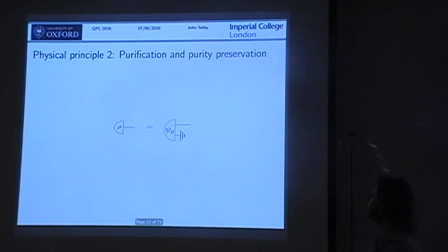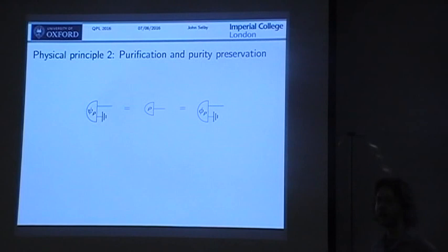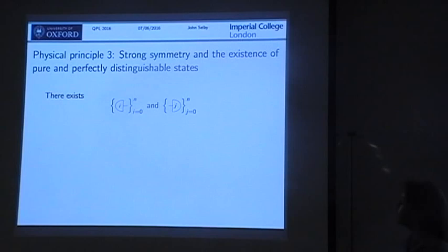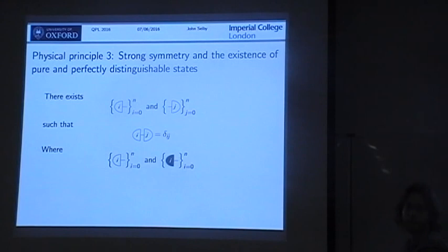Purification says that for every mixed state ρ there's some dilation to a bipartite pure state Ψ(ρ) such that when you trace it out you get back to the original state. Moreover, if you have two purifications Ψ and Φ that are both purifications of ρ, then they're related by a reversible transformation. Strong symmetry says that if we have a set of pure and perfectly distinguishable states — meaning there's some effect j that picks out which state you have with certainty — then if you have two such sets, there's a reversible transformation T that relates the two of them.